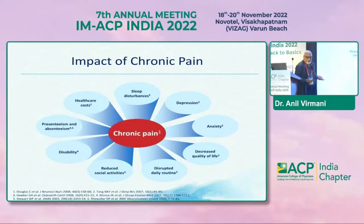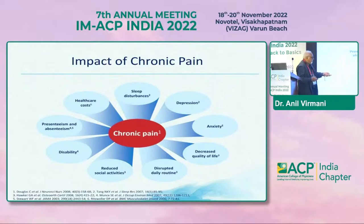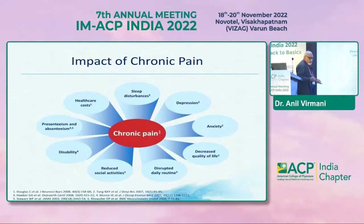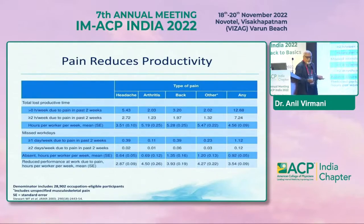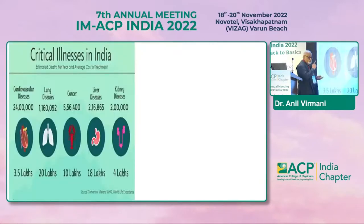Now look at pain — another very common issue. It causes sleep disturbances, depression, anxiety, decreased quality of life, disrupted routine, reduced social activity, disability, and absenteeism. Looking at productivity, almost 12 hours are lost due to pain in 15 days. So what work will the patient do? And that is not even counted.